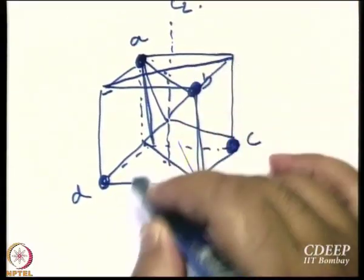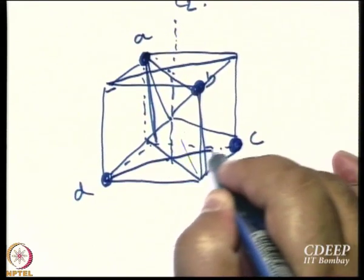What are the planes? Do you see the planes? And another line like this — this is one plane containing bond to D and C2. And similarly, this is another plane. Got it?